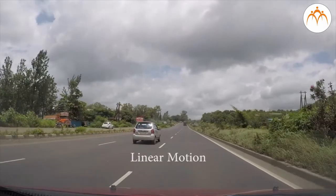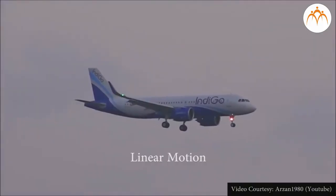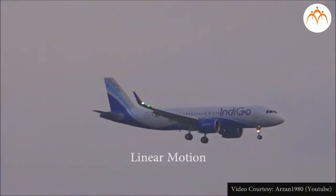A car moving on a straight road, a ball rolling on the ground, an airplane flying straight in the air are examples of linear motion.